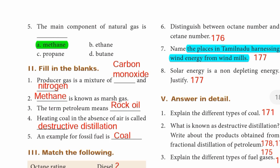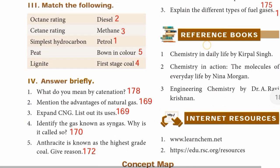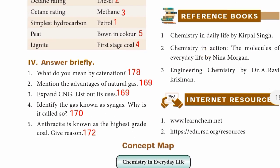Fourth one: Heating coal in the absence of air is called destructive distillation. Fifth one: An example for fossil fuel is coal. Roman number three — Match the following: octane rating matches petrol, cetane rating matches diesel, simplest hydrocarbon matches methane, peat is the first stage of coal, lignite is brown in color. The order is 2, 3, 1, 5, 4.